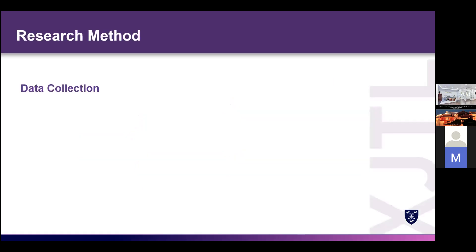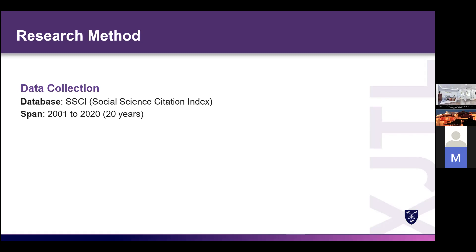Before we talk about scientometric analysis, let's look at what and how the data of this project was collected. For the database, I decided to use SSCI, which is the Social Science Citation Index — SSCI represents the most influential group of journals around the world. The time span was set to be 2001 to 2020, and the topic, which is also the search word, is language teaching.